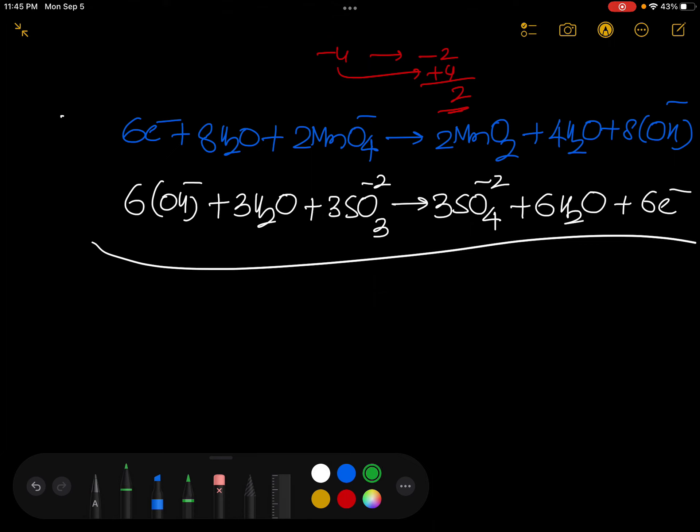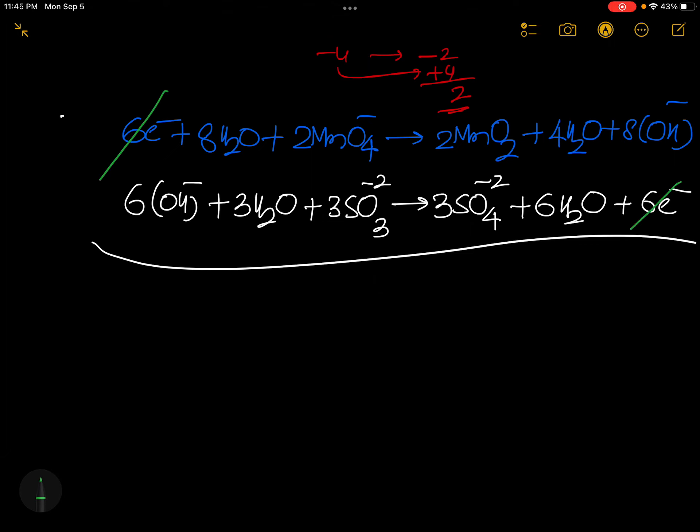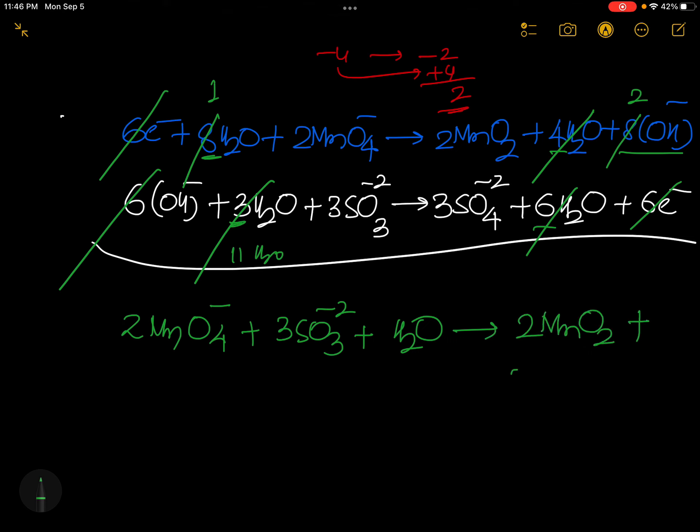What we can do here? First you cancel 6 electrons, job done. Here 6 OH minus and here 8 OH minus are there, cancel this and make it 2. Subtracting here, 8 plus 3 total 11 waters are there, 4 plus 6, 10 are there. So cancel all this and make only one water available here.